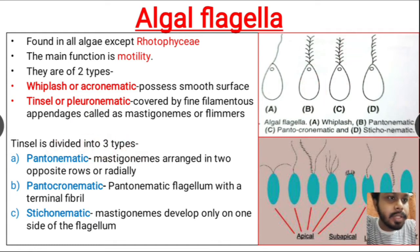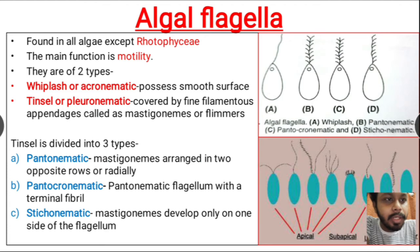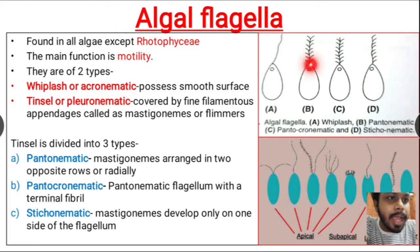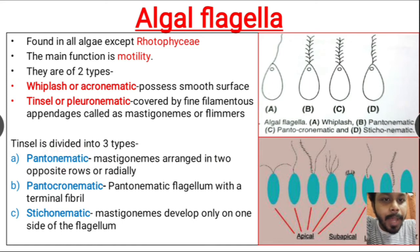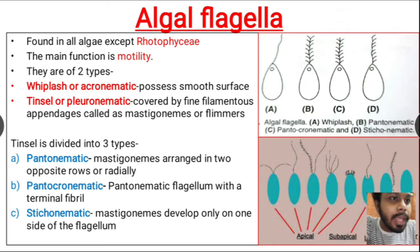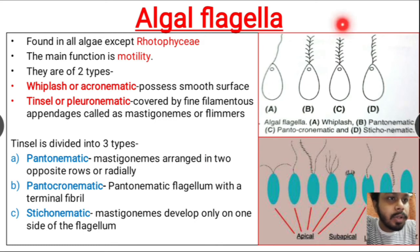Tinsel or pleuronomatic flagella are further divided into three types: pantonematic, pantochronematic, and stichonemtic. In pantonematic type, mastigonemes or filaments are arranged in two opposite rows laterally. In pantochronematic type it is similar to pantonematic, but additionally one filament or mastigonum is present pointing upwards at the tip of the flagellum.